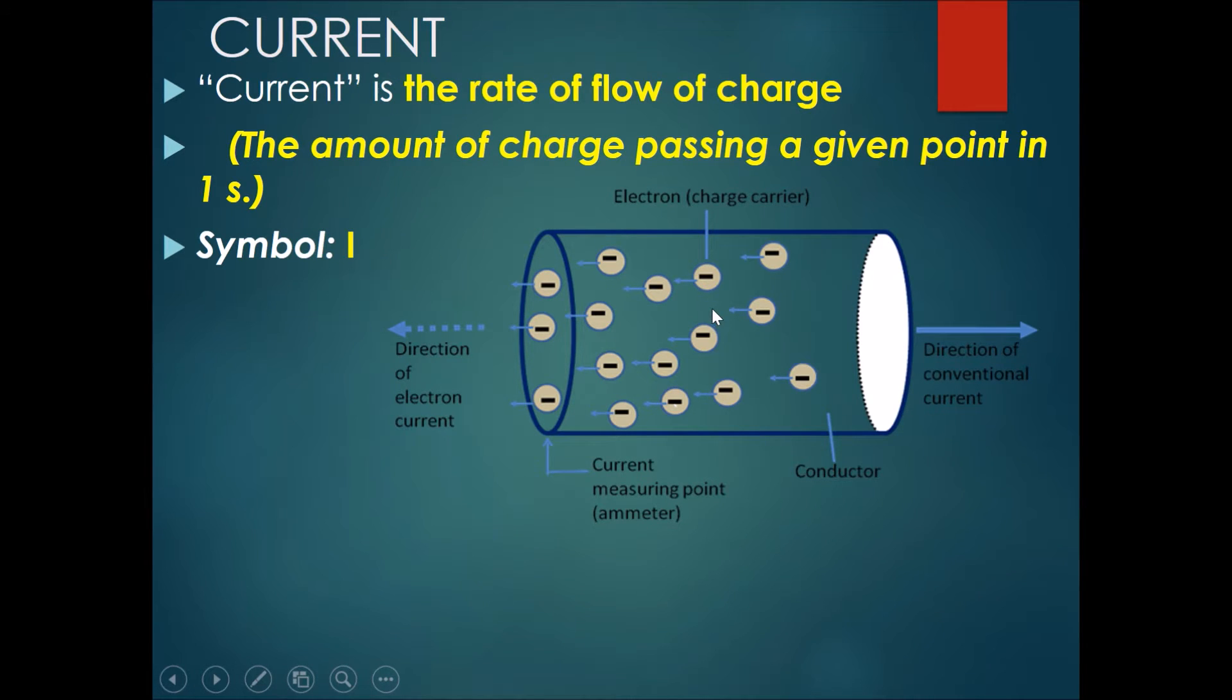So exactly what would current be? Think about it this way. Imagine this is a section of a wire and inside a wire there are charge carriers called electrons.